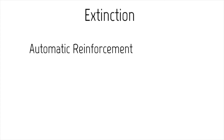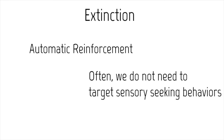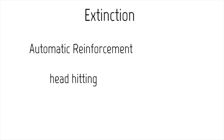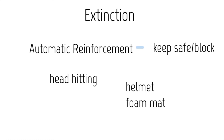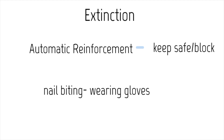Automatic reinforcement or sensory behaviors are often not necessary to target if they're not harming anyone — it's just regulating the individual. But in some cases, behaviors maintained by automatic reinforcement may cause harm. For example, if a child engages in head-hitting and the function is hypothesized to be automatic reinforcement, we would need to block to keep them safe. Another common example is nail-biting — wearing gloves when it's causing lesions in the skin. Blocking in these cases is the extinction piece for automatic reinforcement-maintained behaviors.